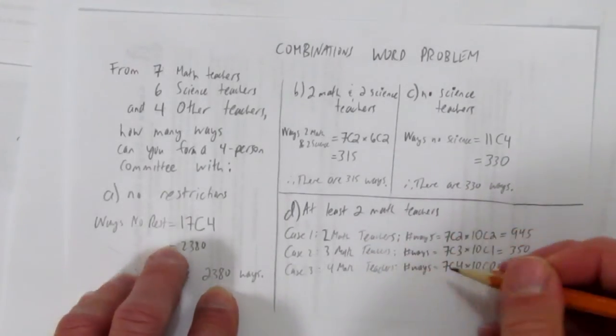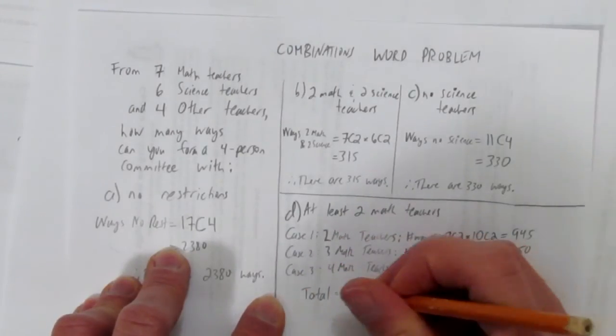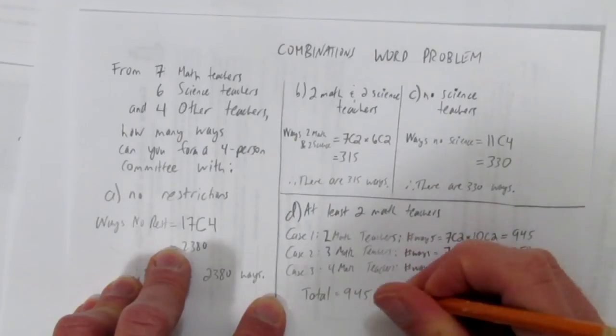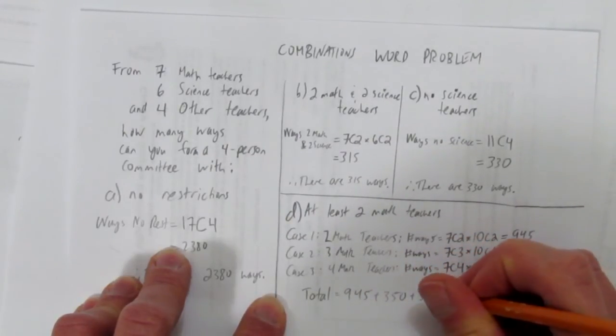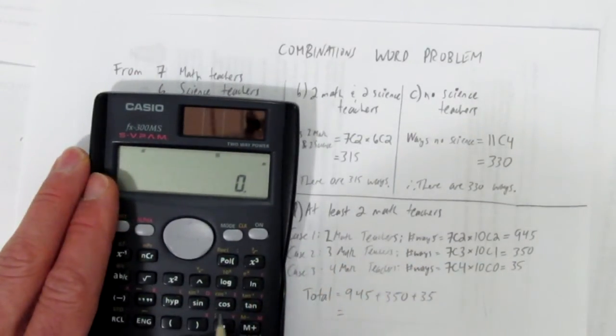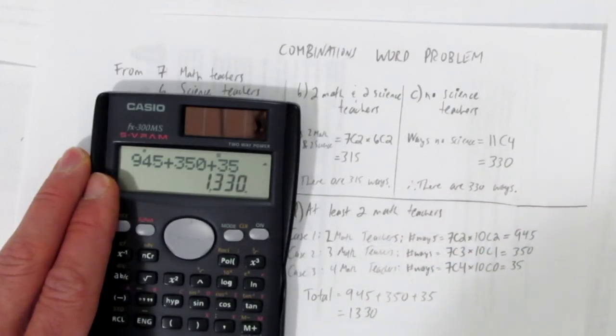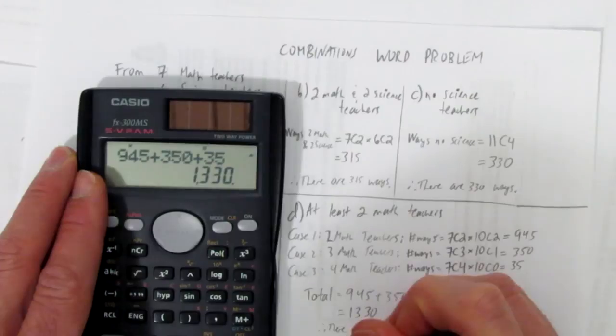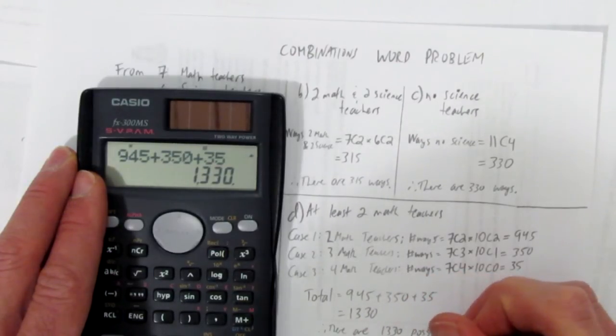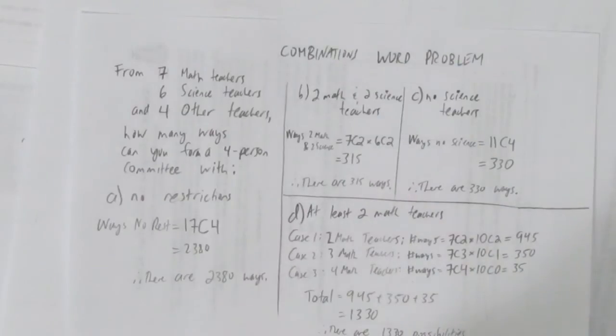Since these are separate cases, we add them together. The total possibilities is just 945, two math teachers, plus 350, three math teachers, plus 35, four math teachers. Use your calculator, or do it in your head, whichever you prefer. And you get one thousand three hundred and thirty. Therefore, in this situation, there are one thousand three hundred and thirty ways. So these are some different parts to a combinations word problem.